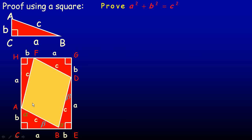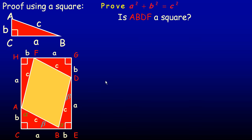And so we have this figure in the middle that kind of looks like a square. We're going to prove, first of all, that it is a square. We could call it A, B, D, F — those are the vertices of that quadrilateral. Is it a square or not?